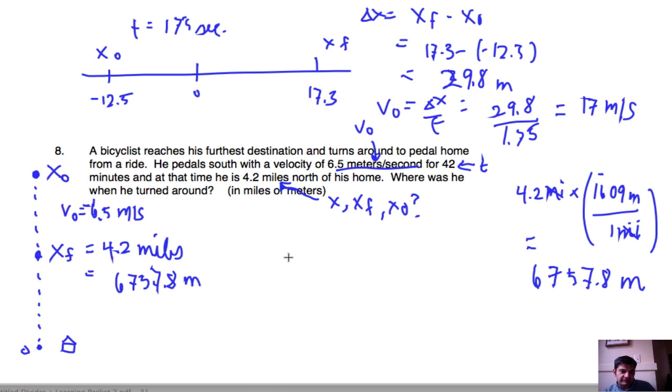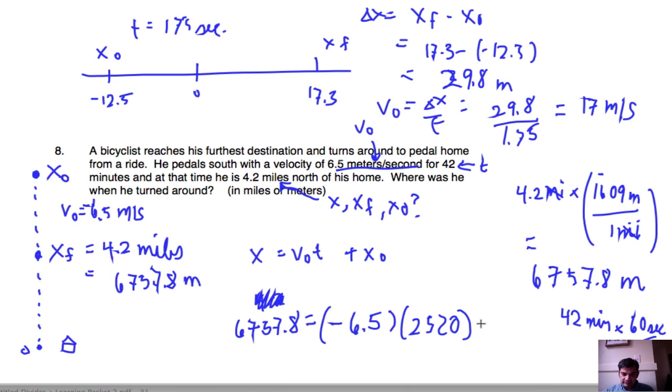Excellent. So also, I need to make this velocity negative since it's in the south direction. So it's very important. So we want to know where he was when he turned around. So let's go ahead and use the formula x equals v0 t plus x0. So we end up 4.2 miles north, but we need to not do that. We need to do it in meters. So 6,757.8 equals traveling south, negative 6.5. And the time was 42 minutes. So we need to convert 42 minutes into seconds. So that's 60 seconds in one minute. And that's going to give us 2,520 seconds plus our initial position that we don't know what it is.